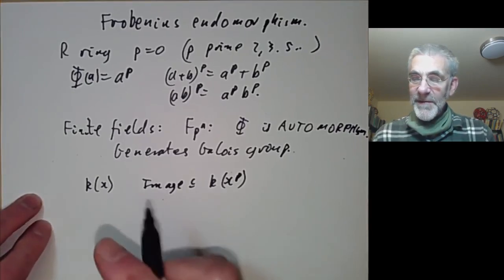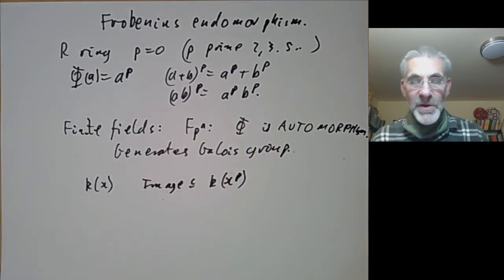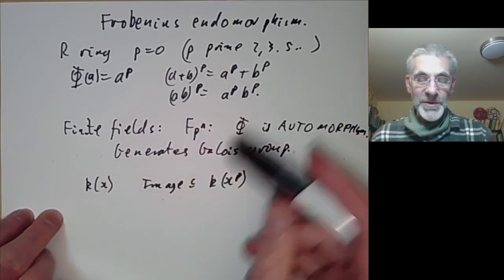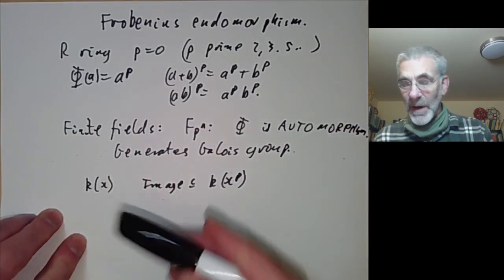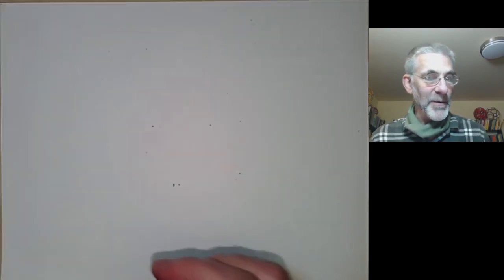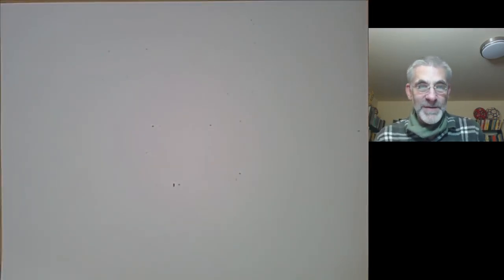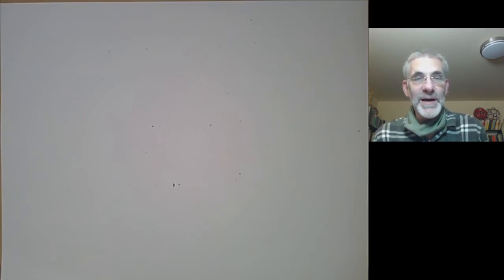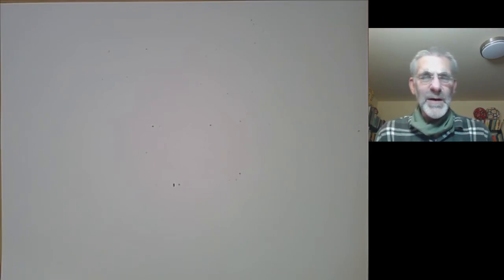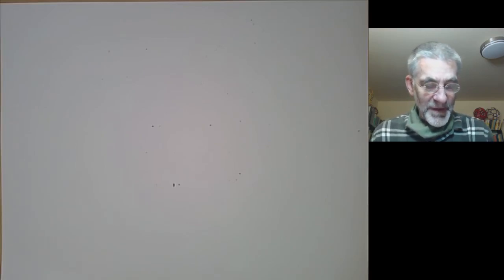It seems as if the Frobenius automorphism or endomorphism is only useful in characteristic P — if you're in characteristic zero, this construction just doesn't make sense. However, there is a way of getting a Frobenius automorphism in characteristic zero, and this gives one of the very few easy ways of constructing explicit elements of Galois groups. The other easy way is to use complex conjugation, which is a sort of analogue of the Frobenius automorphism for infinite primes.